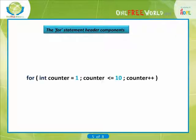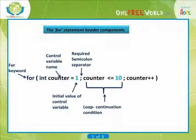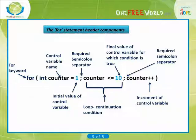The for statement header components: for is the keyword, followed by the control variable name. The initial value of the control variable is 1. A semicolon is used as a separator and is followed by a loop continuation condition. The final value of the control variable for which the condition is true is listed. Again, a semicolon is required to separate the expressions. The last expression is the increment of the control variable.